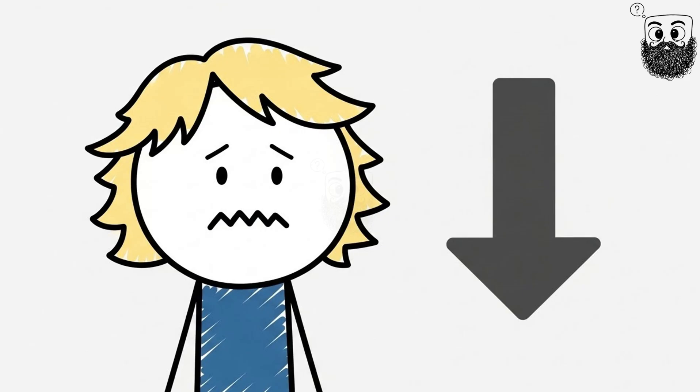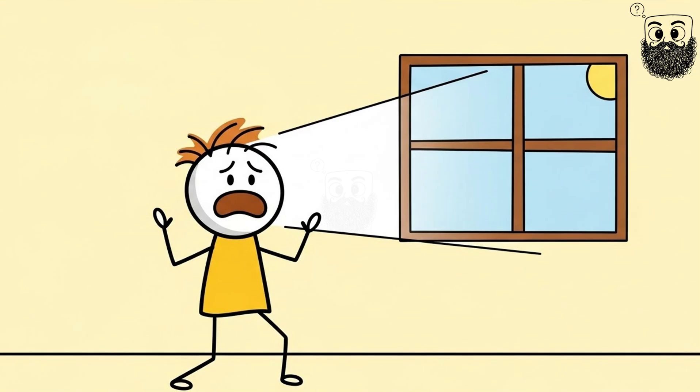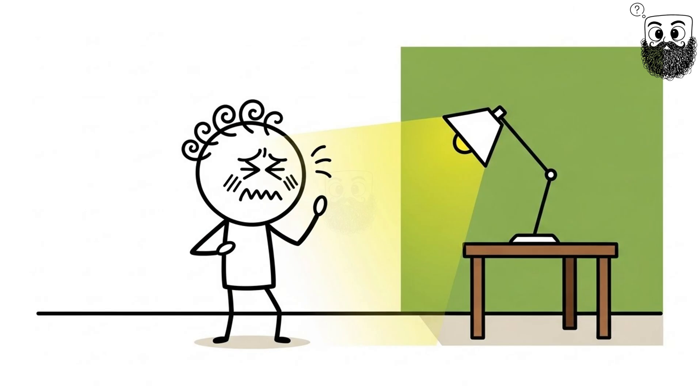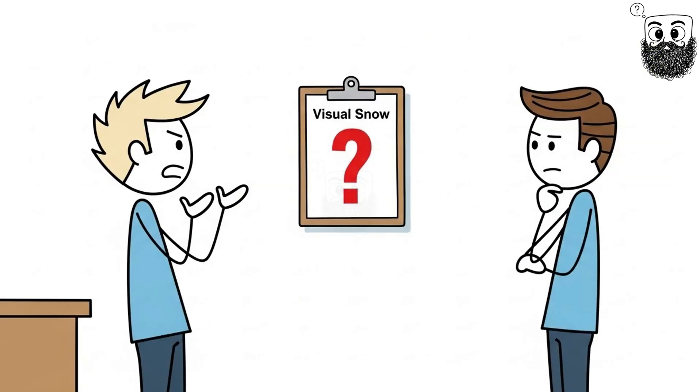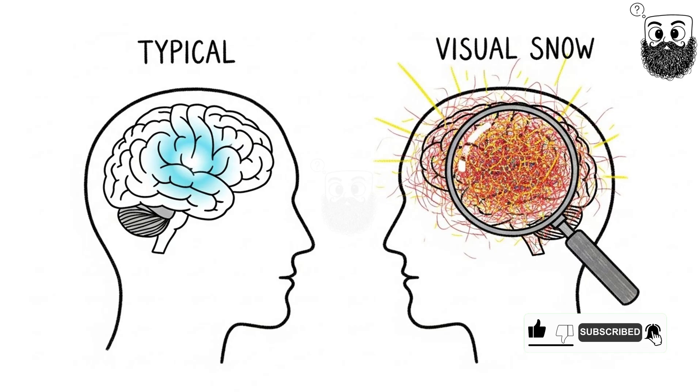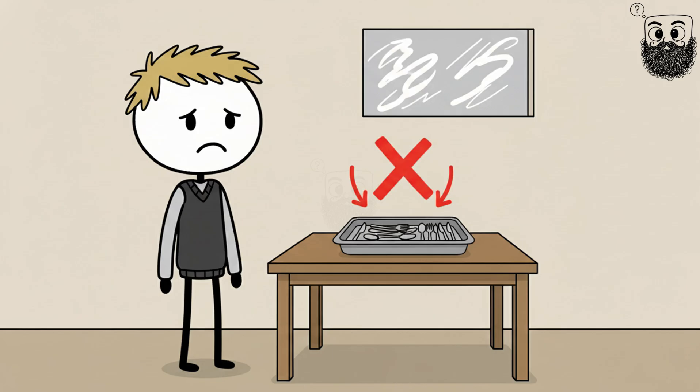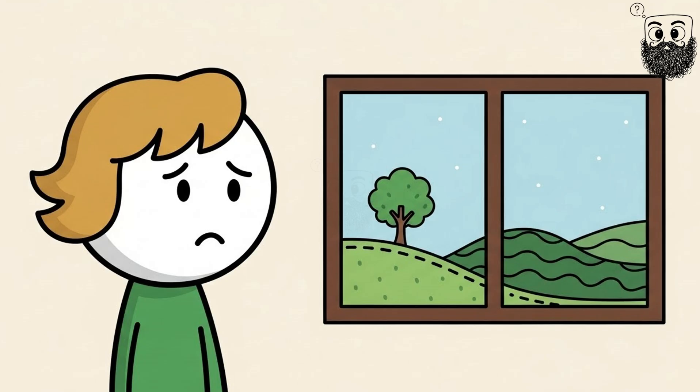And it gets worse. You might see intense after images when you look away from bright objects. Moving cars leave trails behind them like they're in slow motion. Regular lighting feels like staring into the sun. Here's the thing. Doctors can diagnose this thing, but they can't fix it. Brain scans show your visual cortex is firing differently than everyone else's, but there's no magic pill to make the snow stop. No surgery to clear your vision. You just get to live with a permanent filter over reality.